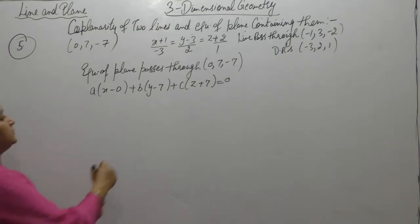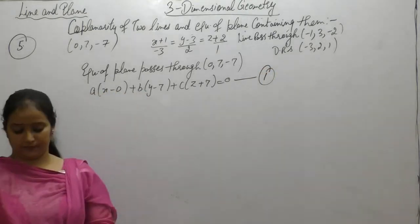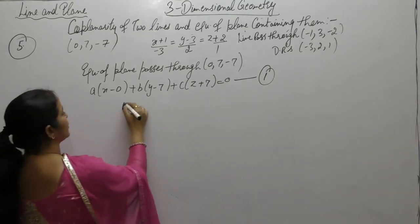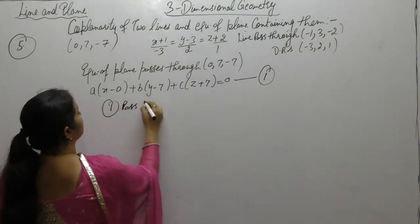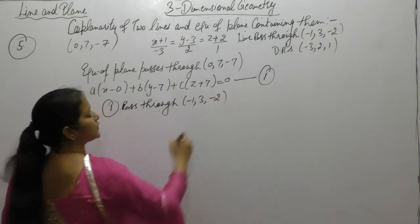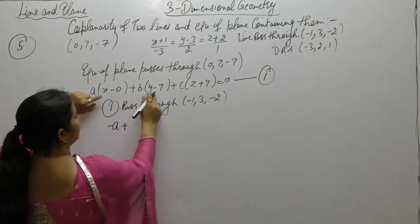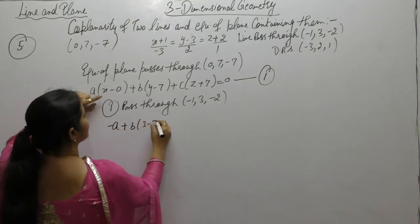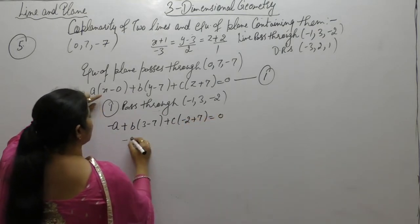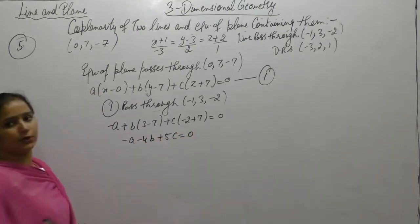If plane 1 contains this line, it must pass through that point. So plane 1 passes through minus 1, 3, minus 2. Substituting these values for x, y, z: minus a, y is 3 giving minus 7, and minus 2 plus 7. So we get the equation as minus a minus 4b plus 5c equals to 0.